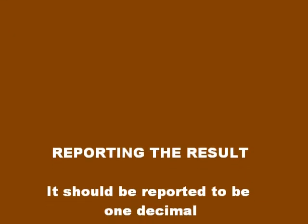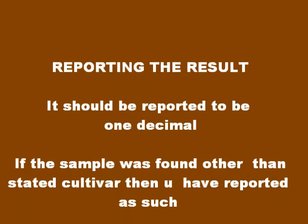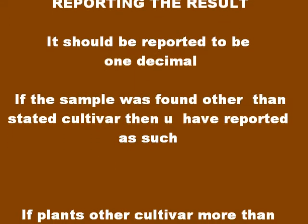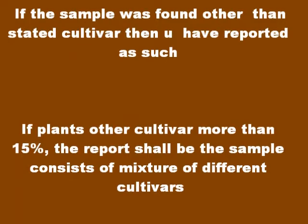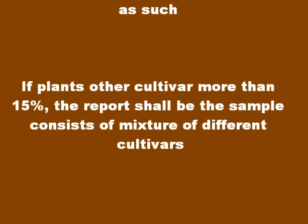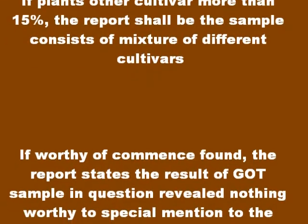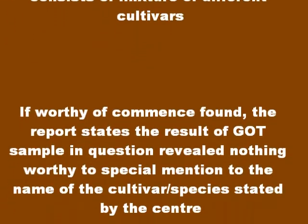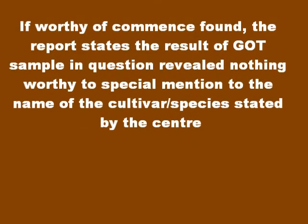Reporting the result: it should be reported to two decimal places. If the sample was found to be other than the stated cultivar, then it should be reported as such. If plants of another cultivar are more than 50%, the report shall state that the sample consists of a mixture of different cultivars. If nothing worthy of comment is found, the report states the result of growth test: the sample in question revealed nothing worthy of special mention to the name of the cultivar or species stated by the submitter.